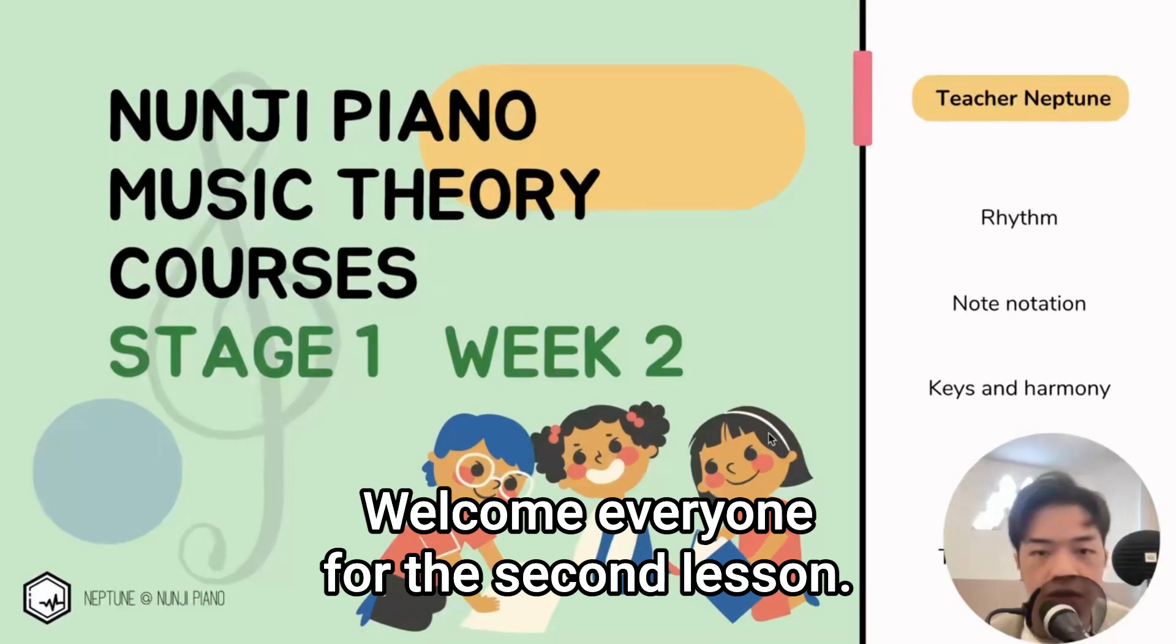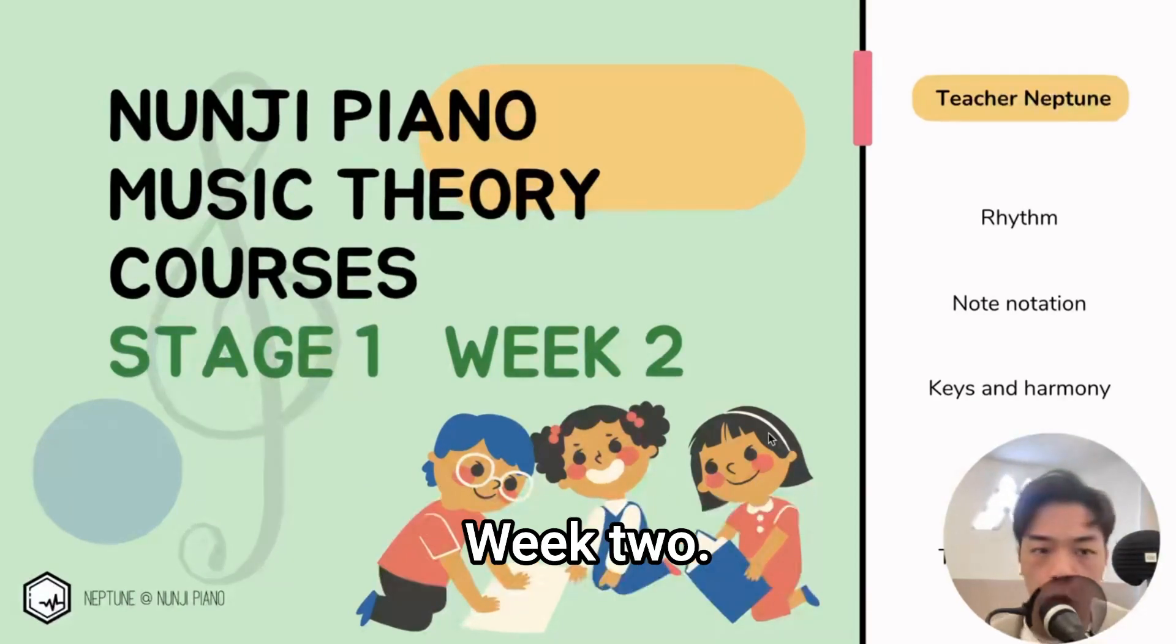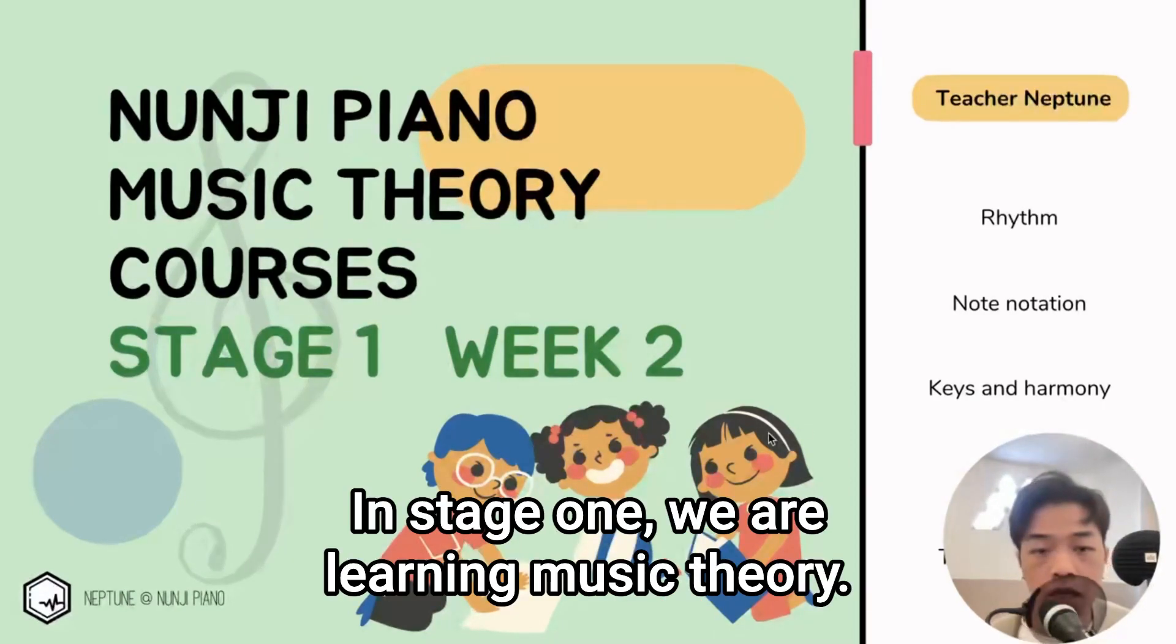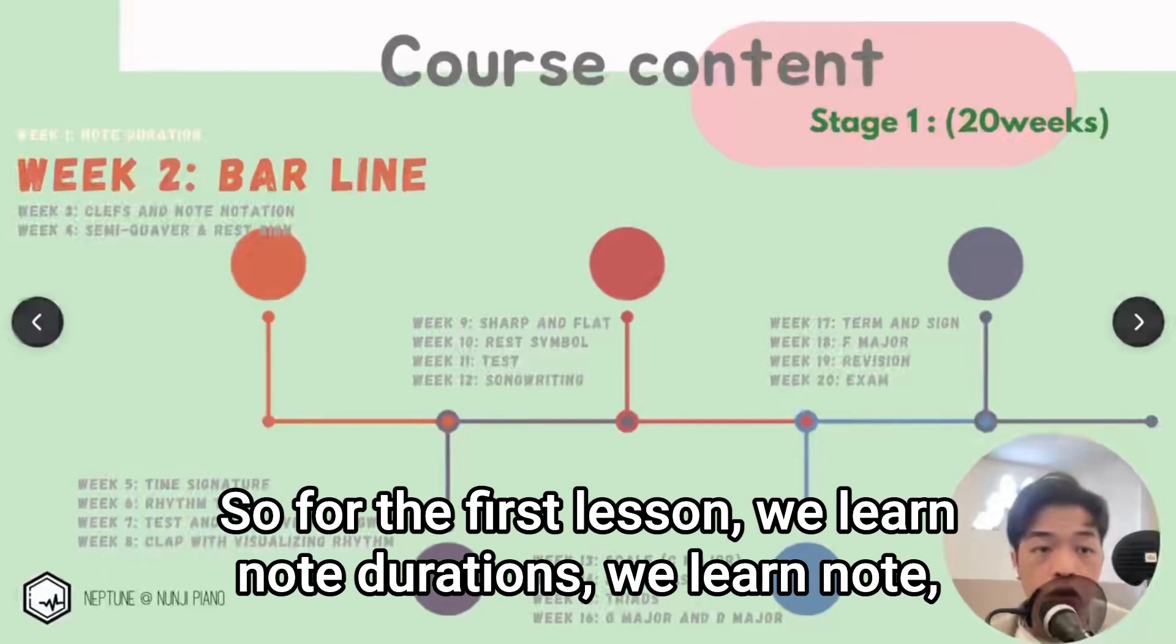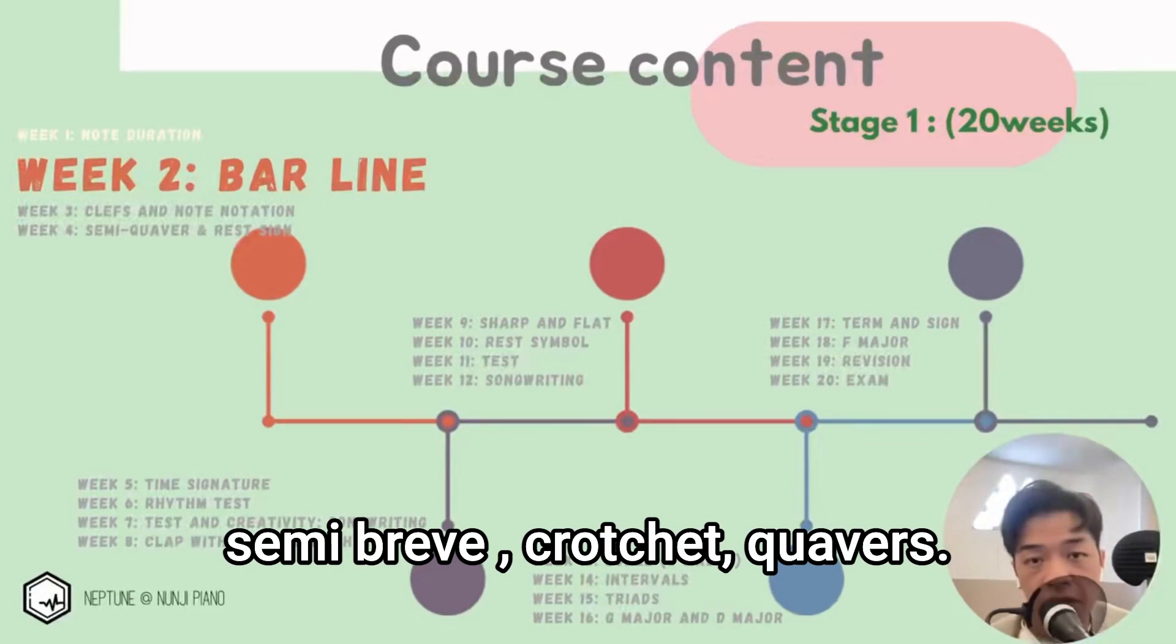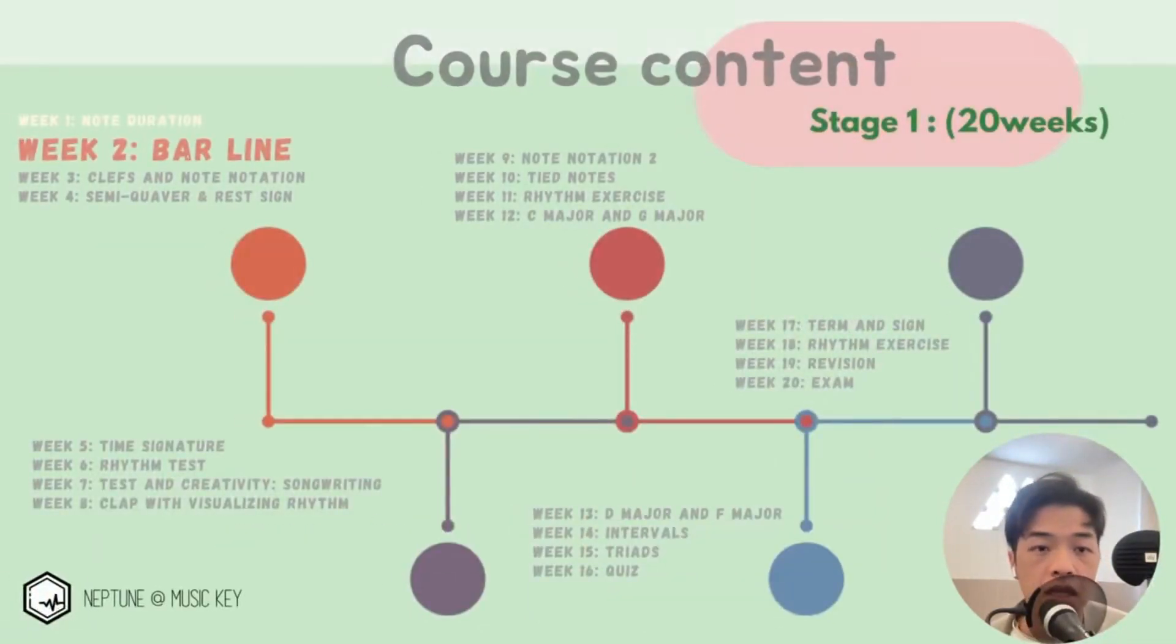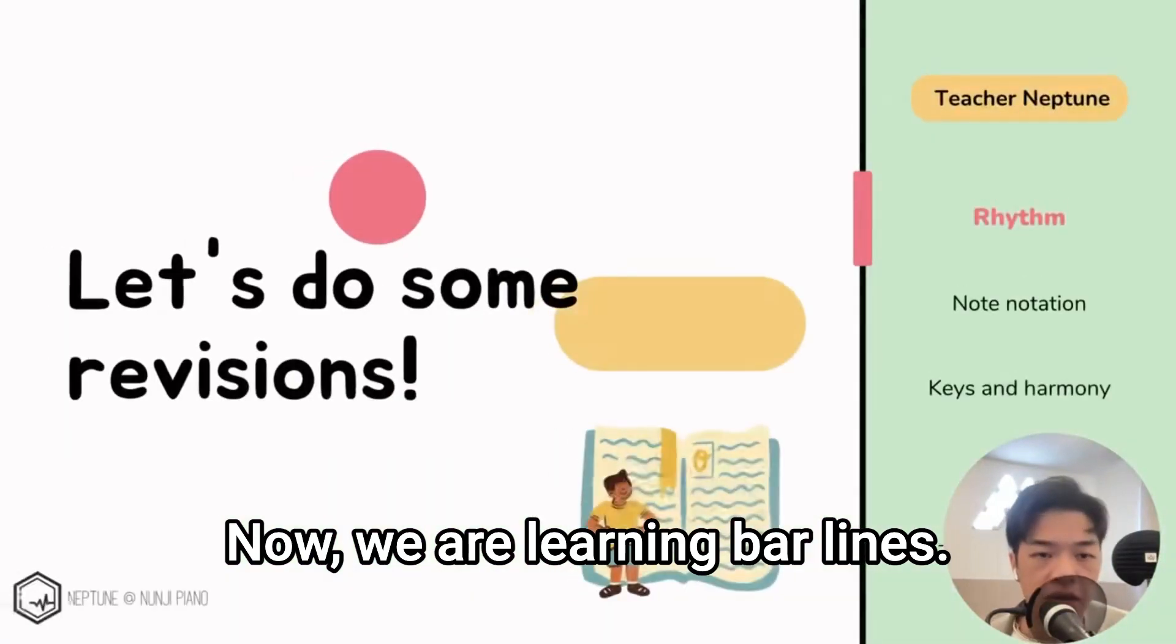Welcome everyone for the second lesson, week 2 in stage 1. We are learning music theory. For the first lessons we learned note durations: semi-braves, crotchets, and quavers. Now we are learning bar lines. Let's do some reflections.